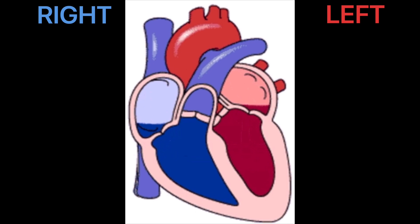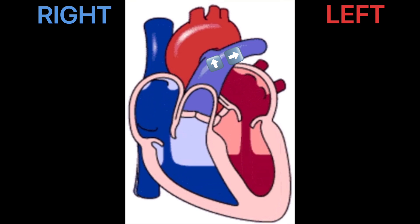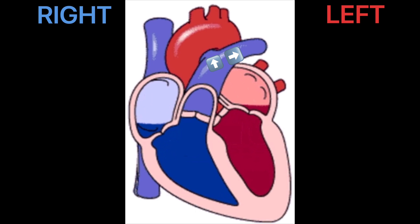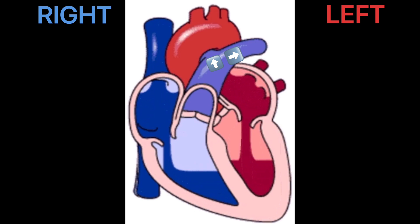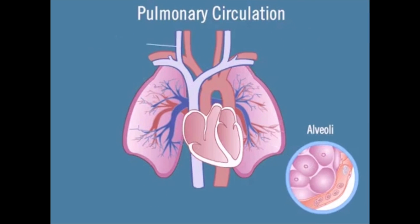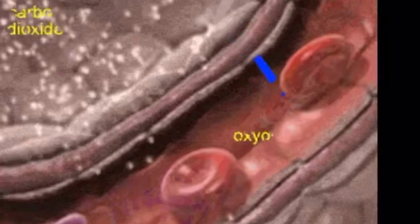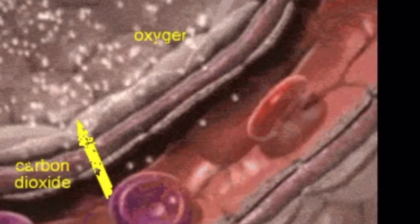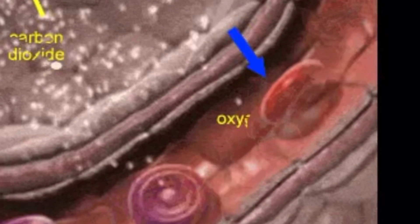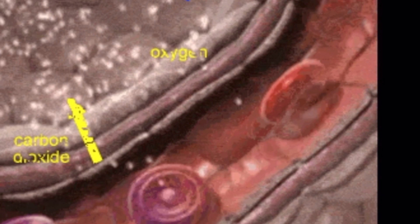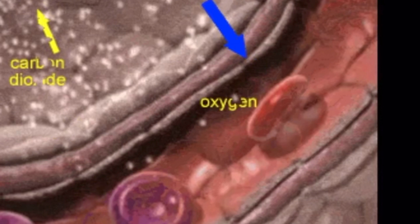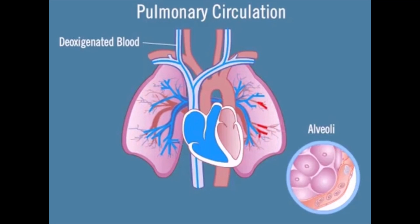How does blood flow through your lungs? Once blood travels through the pulmonic valve, it enters your lungs — this is called pulmonary circulation. Blood travels from the pulmonary artery to the tiny capillary vessels in the lungs, where oxygen travels from the tiny air sacs through the walls of the capillaries into the blood. At the same time, carbon dioxide, a waste product of metabolism, passes from the blood into the air sacs and leaves the body when you exhale. Once purified and oxygenated, the blood travels back to the left atrium through the pulmonary veins.